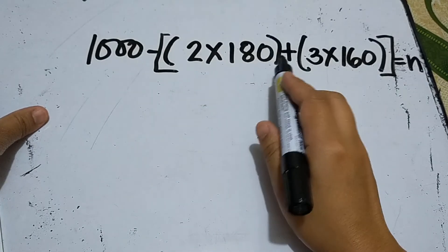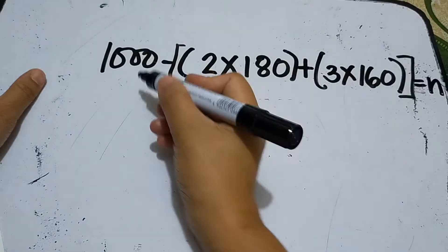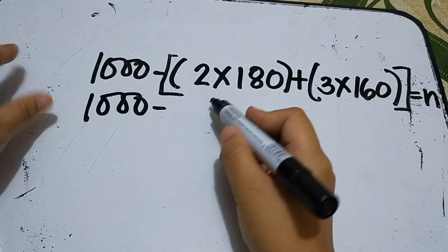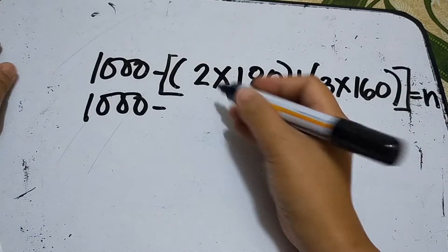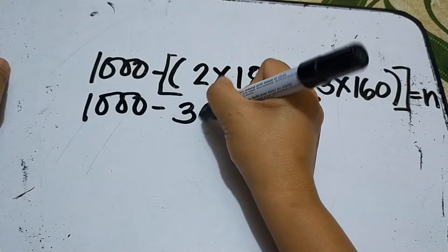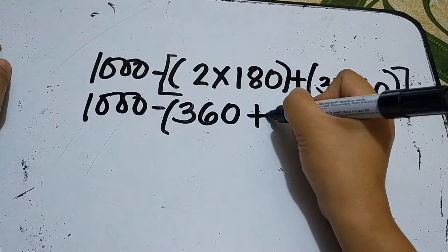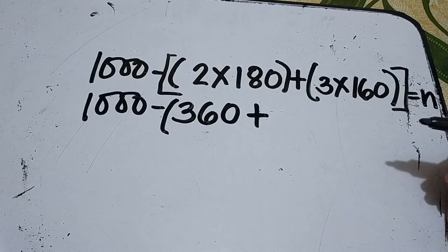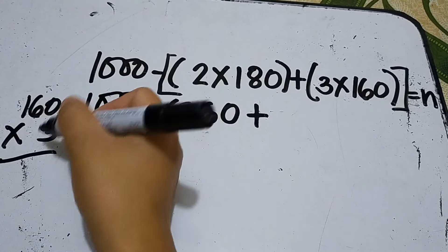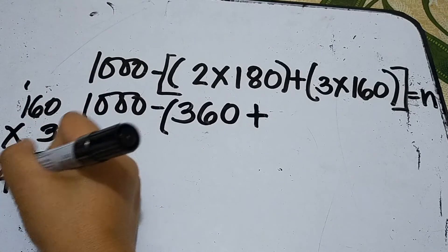Three operations are used, which means this is an example of non-routine problems. What we'll do is follow the PEMDAS rule: simplify what's enclosed in parentheses. 2 times 180 is 360. If you can't do it mentally, you can scratch it out. Put parentheses here, plus. Let's say you really can't do 160 times 3 without scratching—that's fine. 160 times 3: 3 times 0 is 0, 3 times 6 is 18, 3 times 1 is 3 plus 1 is 4, so 480.